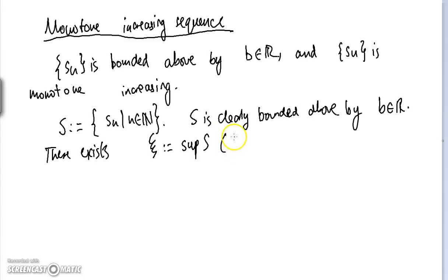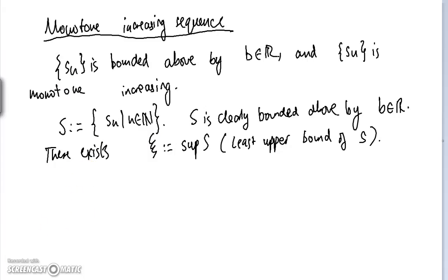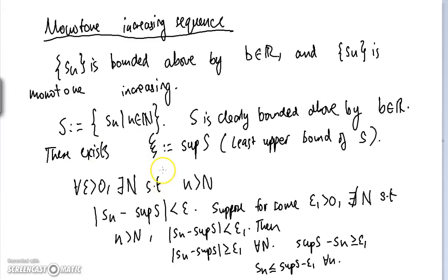S is clearly bounded above by B as per our hypothesis. So by the least upper bound property, there exists a number equal to the supremum of S — that is, the least upper bound of S. In fact, this sequence is going to converge to the supremum of S. We want to prove that for all epsilon greater than zero, there exists a big N such that if n is greater than N, then the distance between Sn and the supremum of S is less than epsilon.